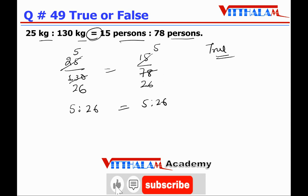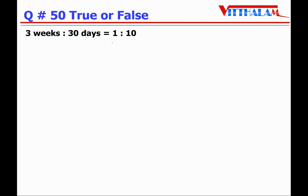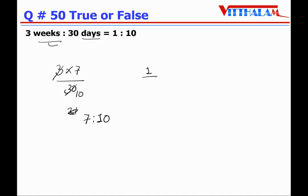Question 50: 3 weeks to 30 days equals 1:10 — False. Convert 3 weeks to days: 3×7 = 21 days. So the ratio is 21:30, which simplifies to 7:10. But the given ratio is 1:10. Since 7:10 ≠ 1:10, the given statement is False.